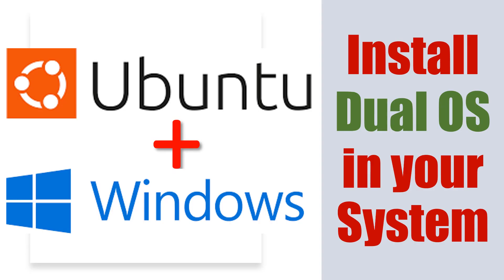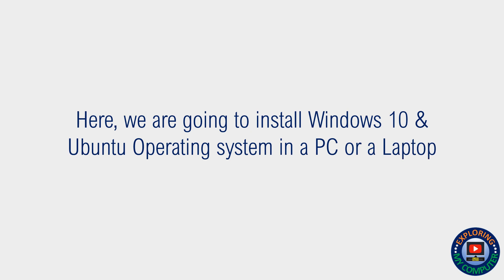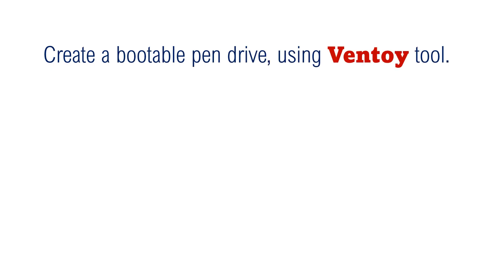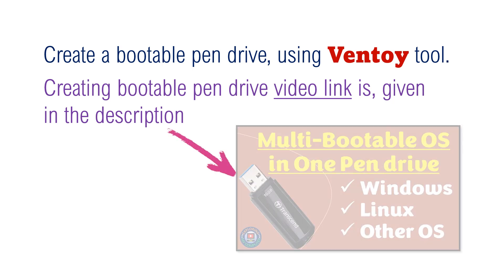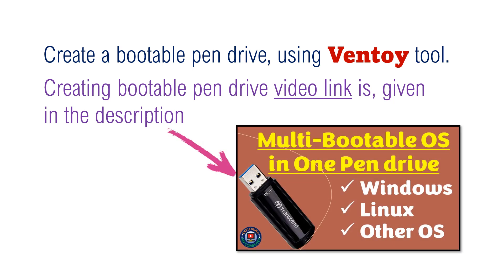This video is about how to install dual operating systems on your PC or laptop. Here we are going to install Windows 10 and Ubuntu operating systems. Create a bootable pen drive using the WinToUSB tool — a link to the bootable pen drive creation video is given in the description.